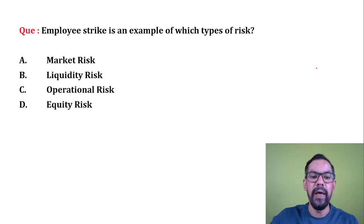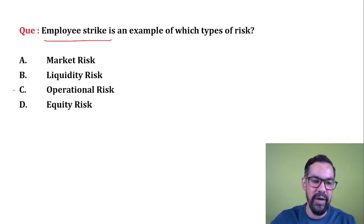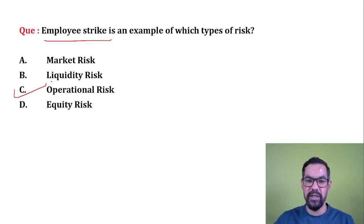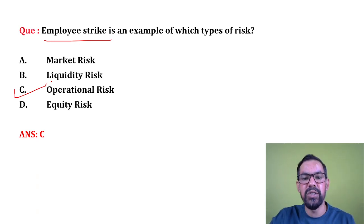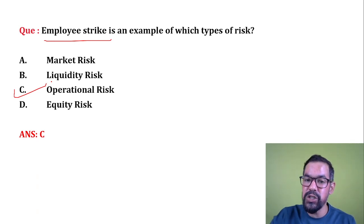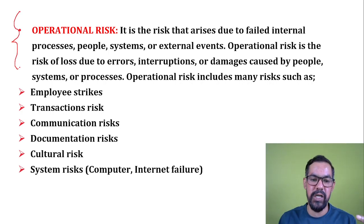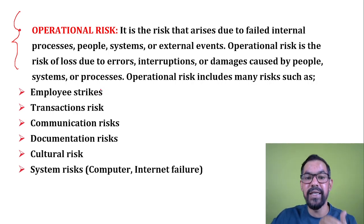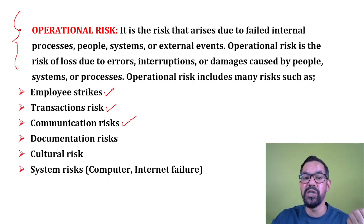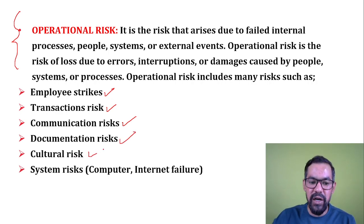Next question: employee strike is an example of which type of risk? The correct answer is operational risk. Employees are part of operations, so when they go on strike it affects the operation of any bank. Whenever you talk about operational risk — anything related to operations such as employee strike, transaction risk, communication risk, documentation risk, cultural risk, and system risk — these are major risks generally involved in operations.